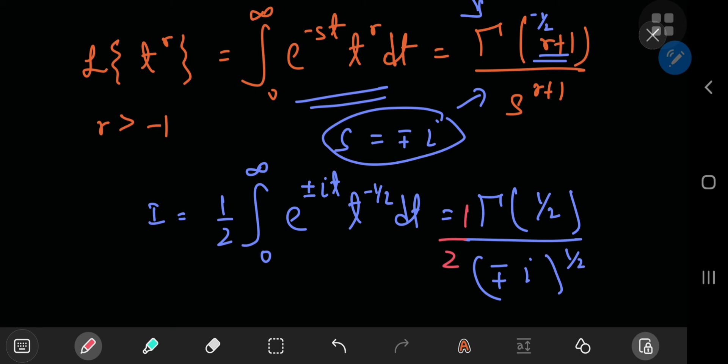So now we have stuff that we're quite familiar with. Gamma 1 by 2 is, in fact, the square root of pi, correct?